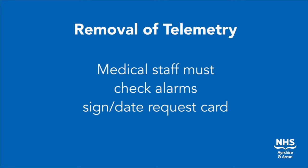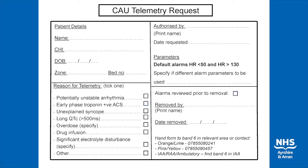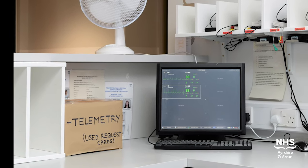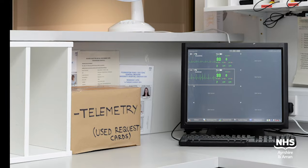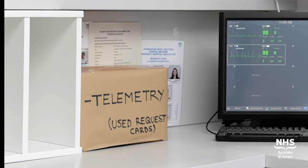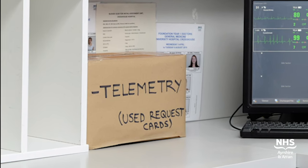When a patient is deemed fit for removal of telemetry, a member of medical staff must review all of the patient's alarms on the central monitor and sign and date the request card to indicate that these alarms have been checked. Then the card must be placed in the telemetry box and the patient must be discharged from the central monitor using the steps described before.